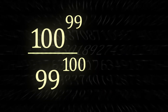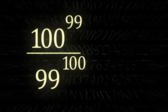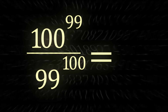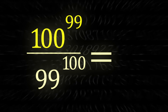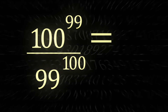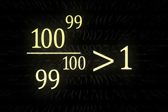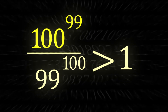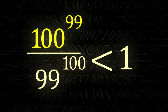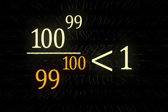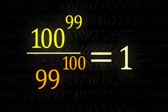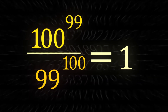A ratio is perfect for this, as our goal is to show which one is larger in proportion to the other. Let's divide 100 to the 99 by 99 to the 100. If this value is larger than 1, it means 100 to the 99 is greater. If it's less than 1, then 99 to the 100 is greater. Of course it could also equal 1, meaning they're exactly the same.